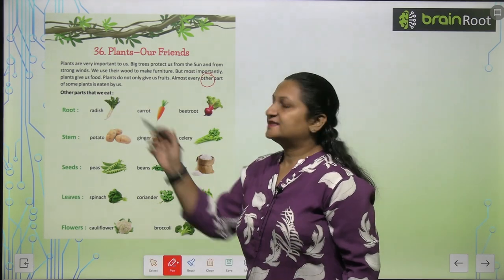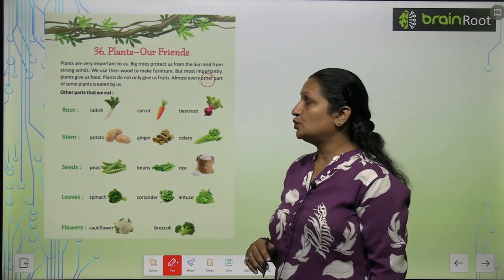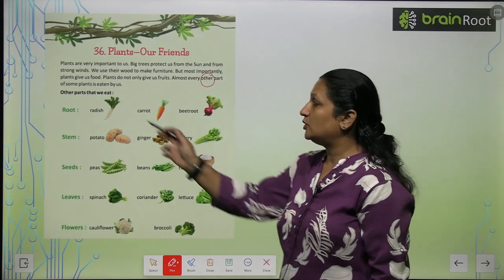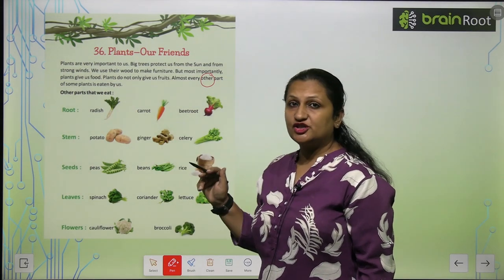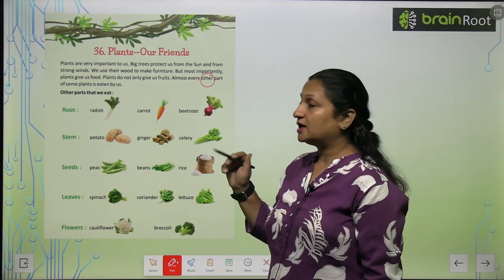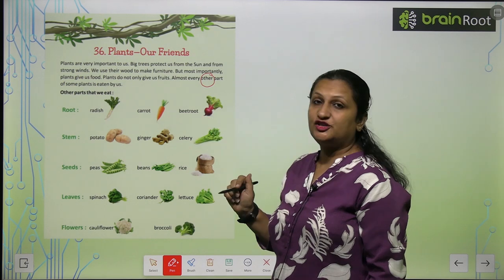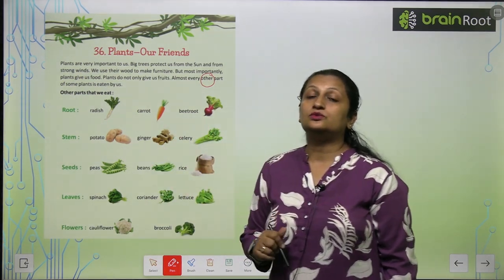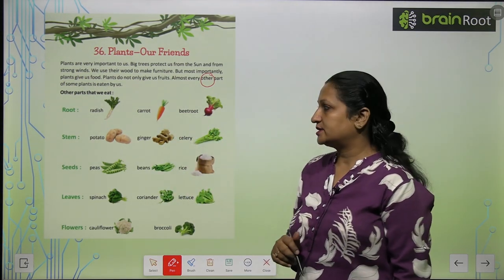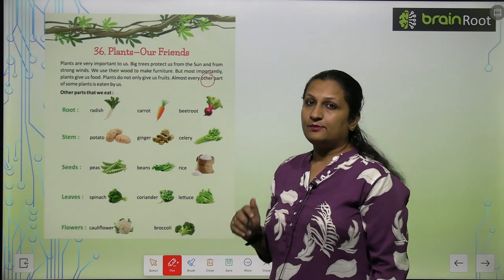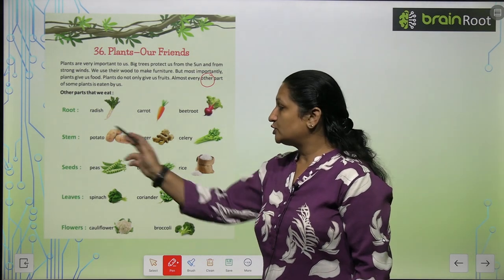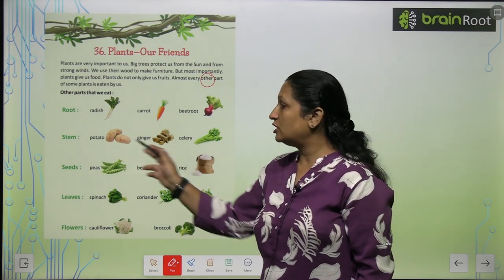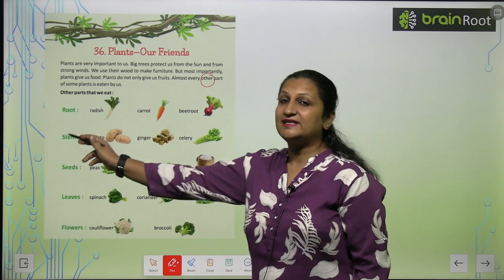Let's look at the other parts that we eat. First is root. You can eat roots like radish, carrot, and beetroot — these are all roots of a plant. Then stem — potato, ginger, and celery all belong to the stem category.